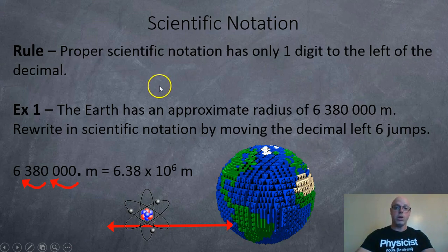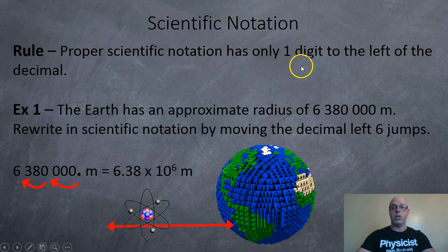So a couple more examples here. The proper scientific notation only ever has one digit to the left of the decimal. So in this case here, we have planet Earth. The planet Earth has an approximate radius of 6,380,000 meters. And to rewrite the number in scientific notation, I'm just going to take that decimal and jump over 3, 6 jumps. And when you jump to the left, you get a positive exponent. So 6.38 times 10 to the 6 meters.